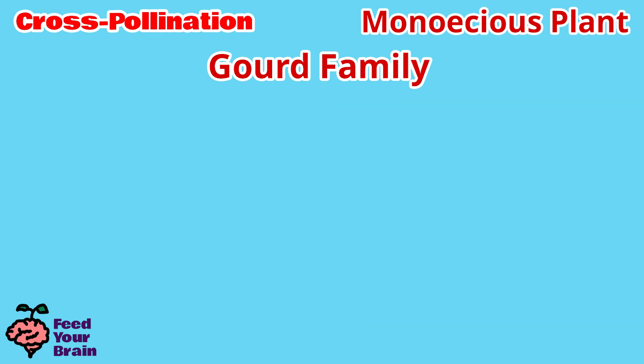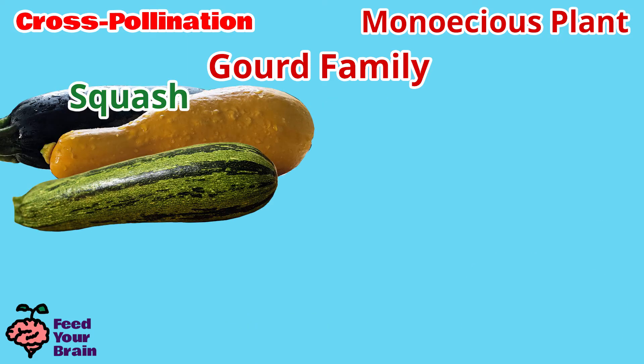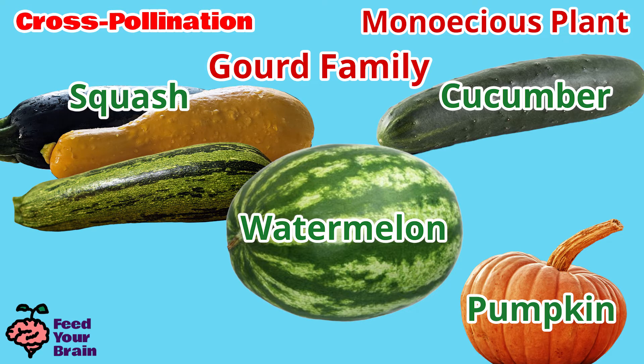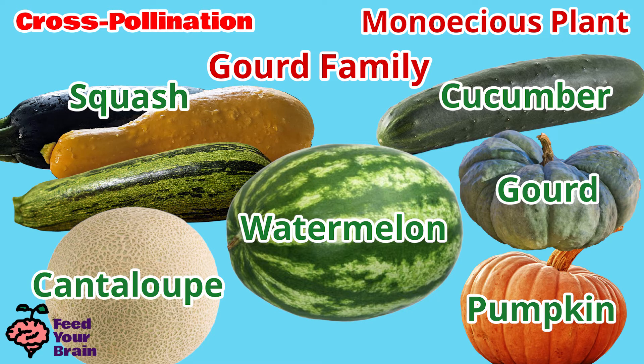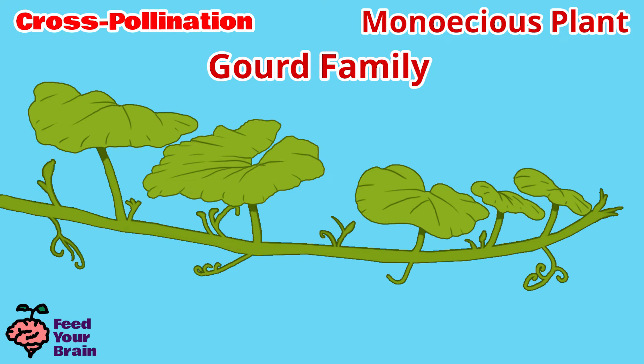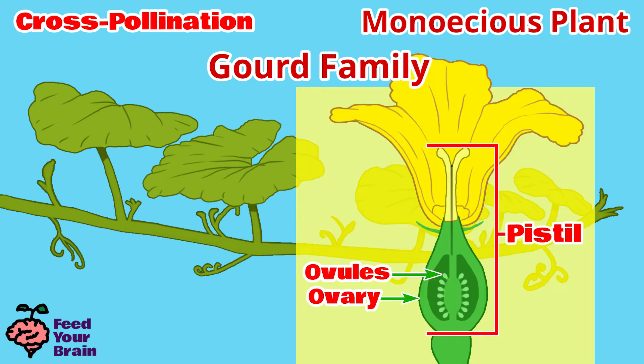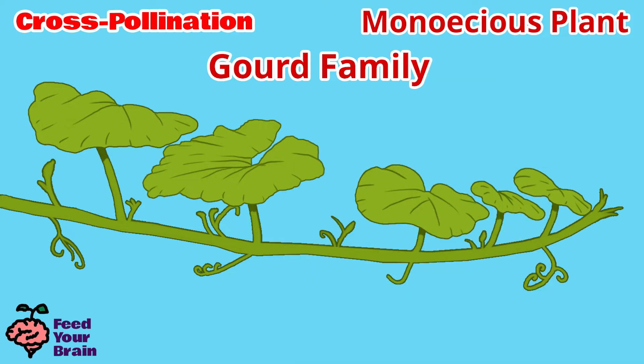The gourd family includes squash, pumpkin, cucumber, watermelon, cantaloupe, and gourds. Imagine that each of these fruits or vegetables grew out of a swollen ovary from the female flower on a vine. With monoecious plants such as the gourd family, you only need one plant to obtain fruit.